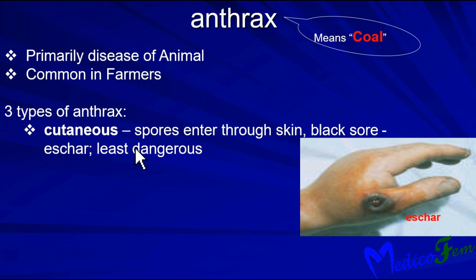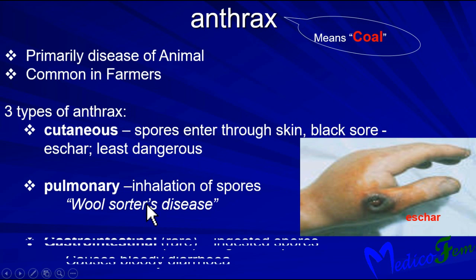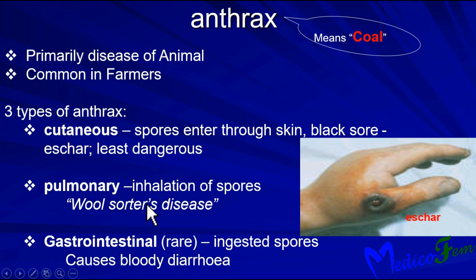Cutaneous anthrax is the least dangerous form. Pulmonary anthrax is caused by inhalation of spores and is also called Woolsorter's disease. The third type is gastrointestinal anthrax, a rare form caused by ingestion of spores, causing bloody diarrhea.